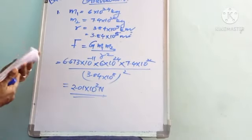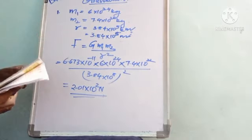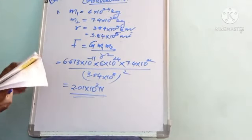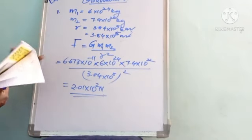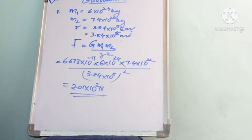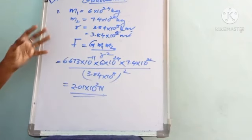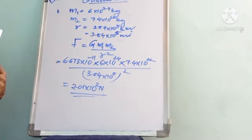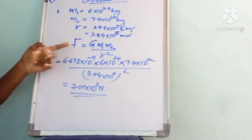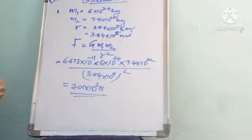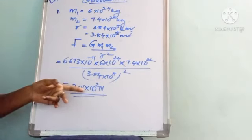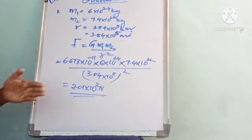To summarize: mass of Earth = 6×10²⁴ kg, mass of Moon = 7.4×10²² kg, distance = 3.84×10⁸ m. Using F = G·m1·m2 / r² and substituting all values, the force is 2.0×10²⁰ N.